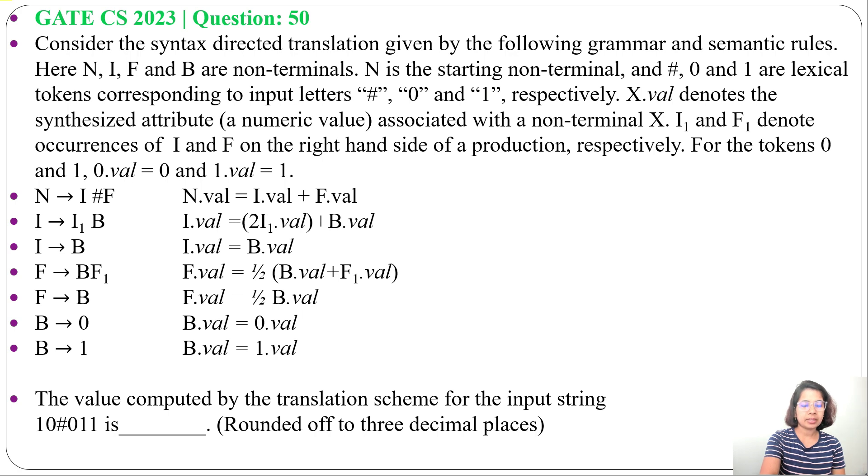So, I need to create 1, 0, #0, 1, 1 from N. So, from N, I will derive I # F. Now, from this I, I will derive 1, 0, # is here. Then, from this F, I will derive 0, 1, 1.